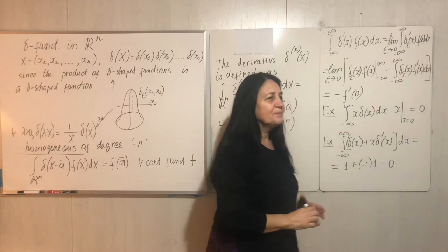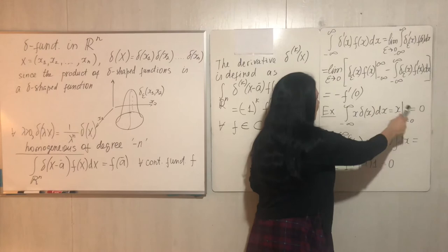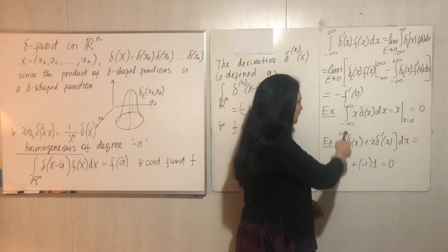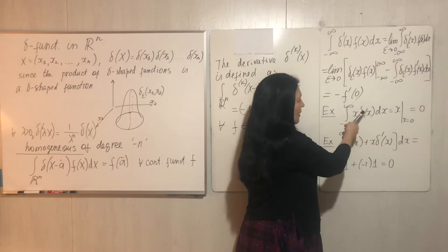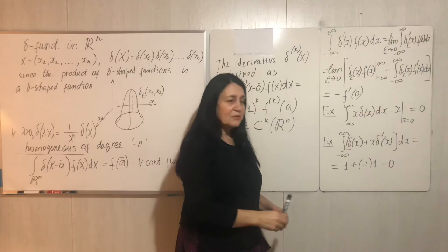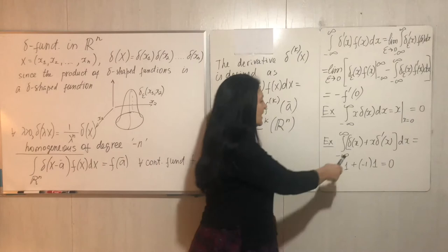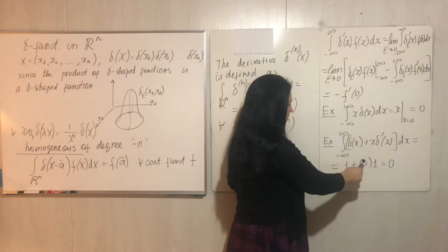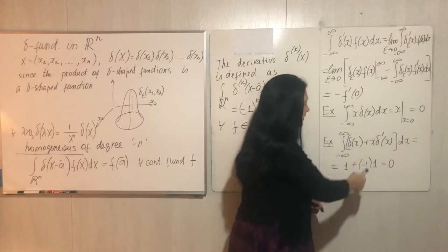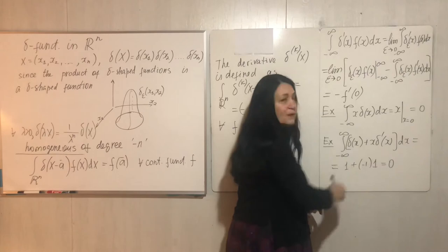If instead we have delta prime at x minus a, the modification is clear: we get minus f prime at a. For higher-order derivatives, assuming f is continuously differentiable the appropriate number of times, we integrate by parts repeatedly. As examples: the integral of x times delta(x) equals 0, since f(x) = x evaluated at 0 is 0. The integral of (delta(x) + delta prime(x)) times x: the first term gives 1, the second gives −1 (derivative of x is 1), so the result is 0.